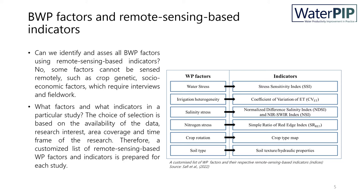In this table, you see on the right side indicators that can be used for particular water productivity factors listed on the left. Remember that there could be multiple indicators that can be used to identify a particular water productivity factor. The choice of selection is based on the accuracy of the indicator and availability of the data to calculate that specific indicator.